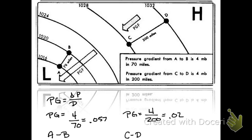Now let's talk terminology. We call it a steeper or stronger pressure gradient at line A to B, and a weaker or gentler pressure gradient at line C to D.